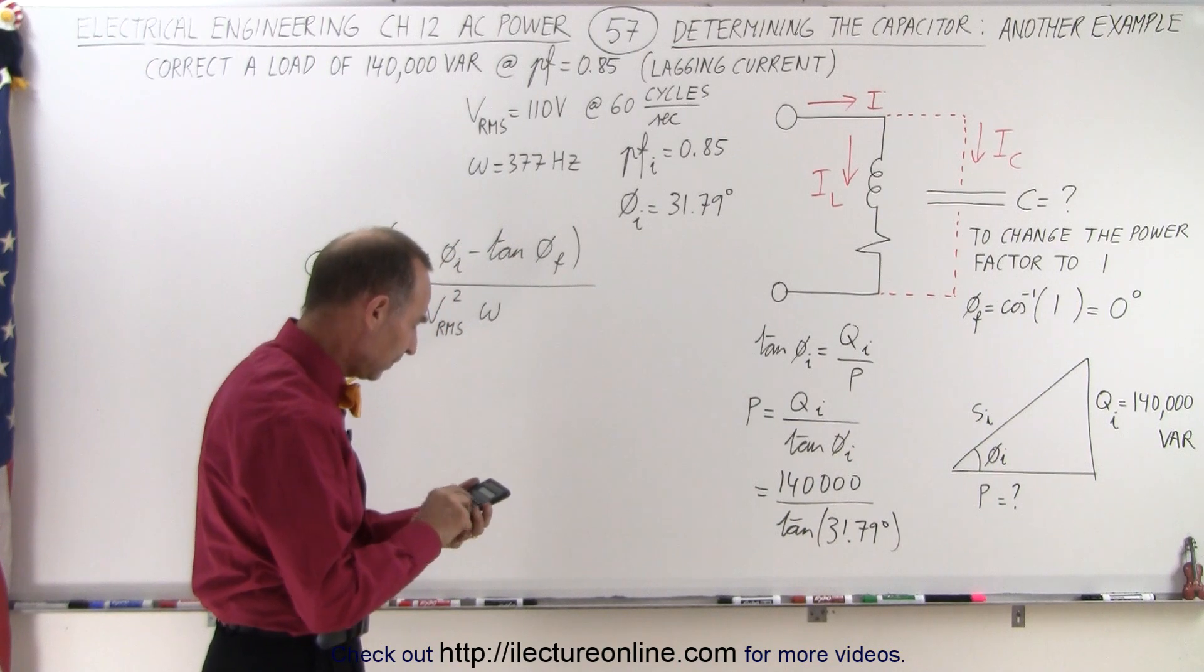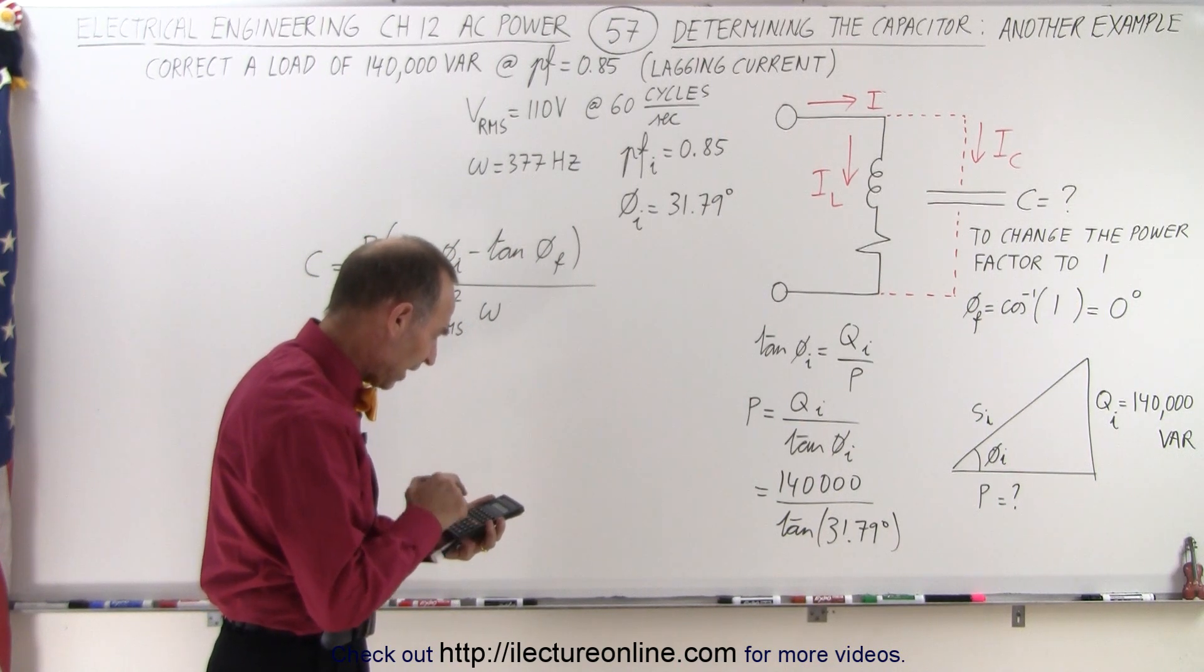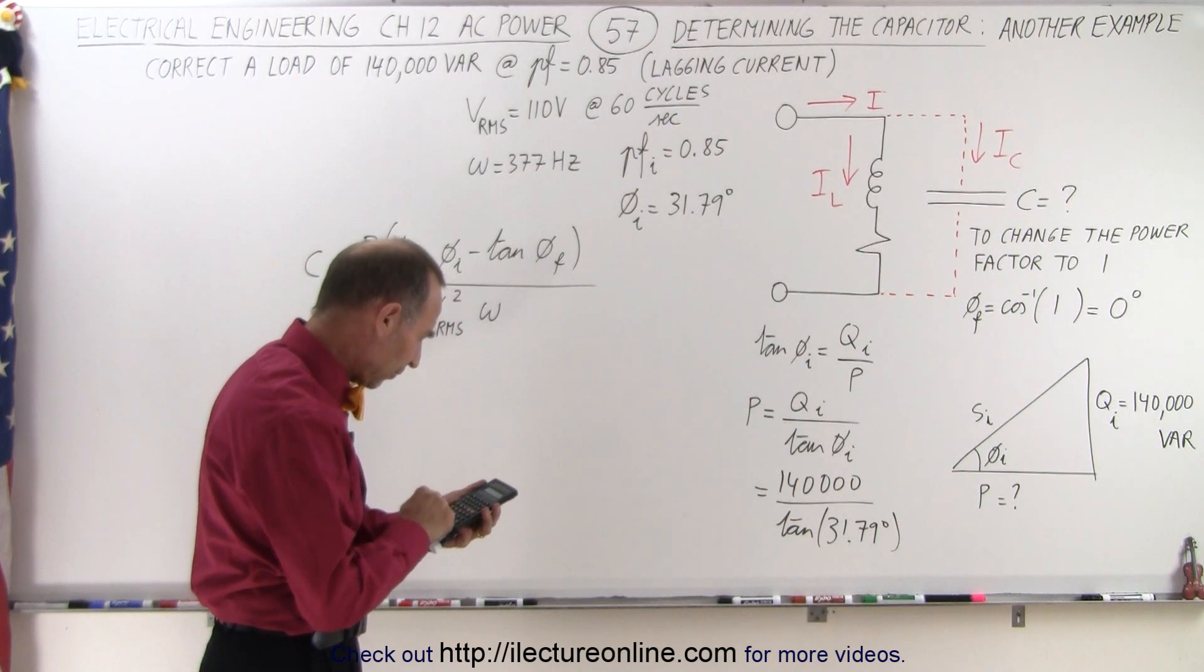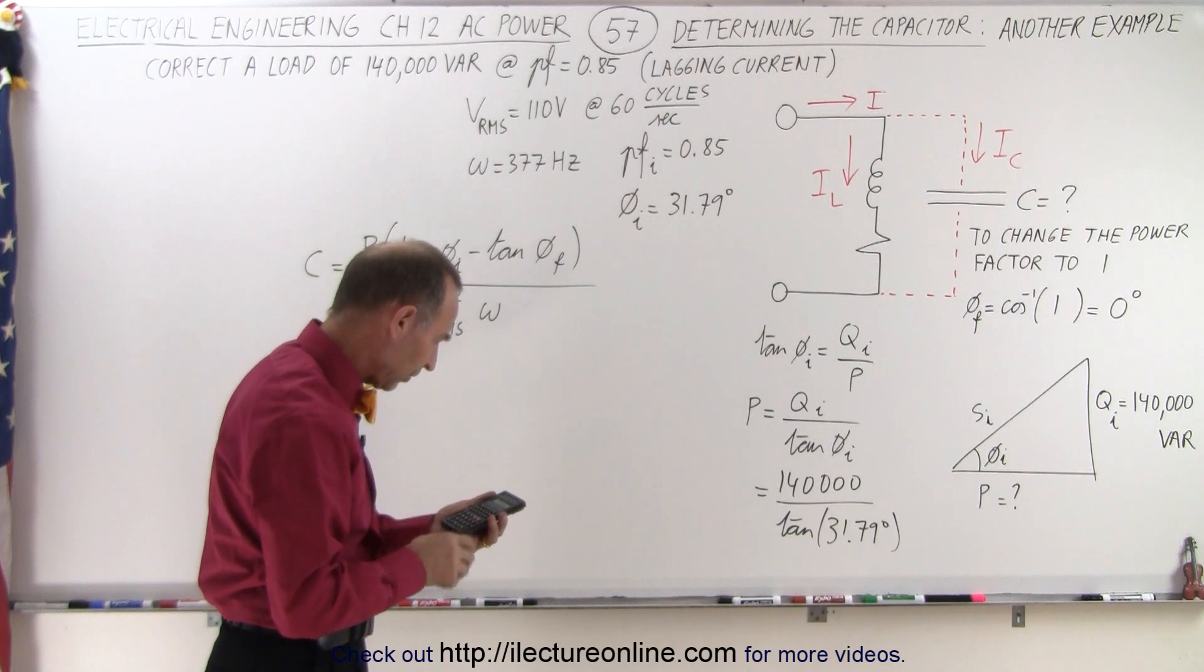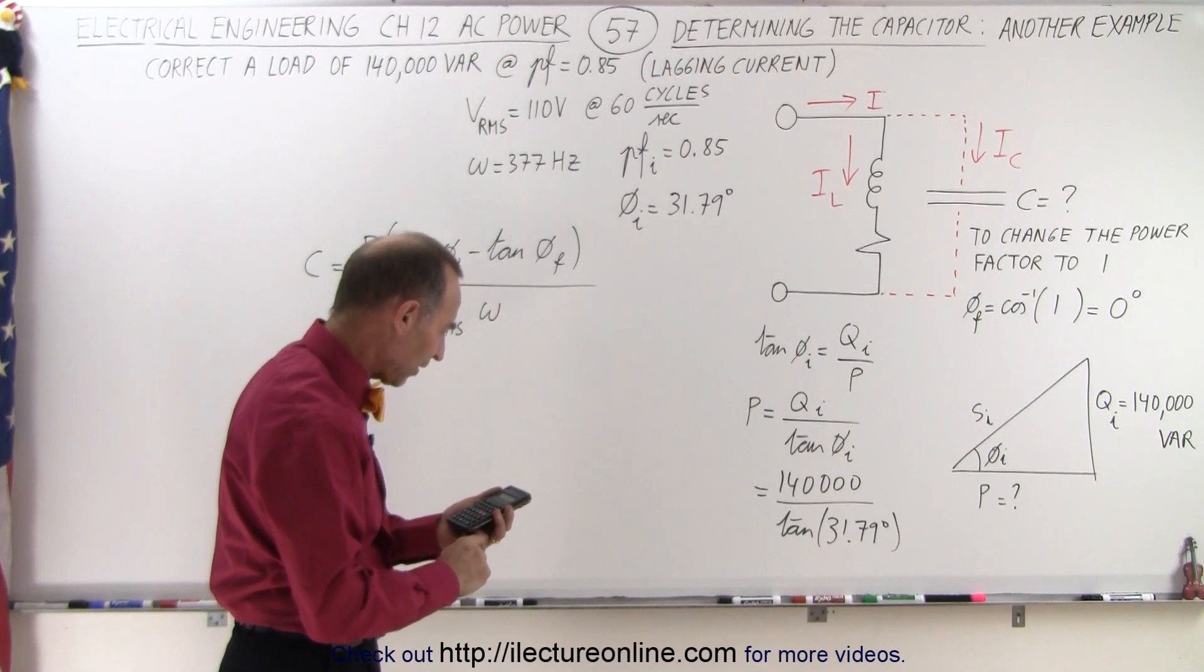We take the tangent of that angle, take the inverse of that, multiply that times 140,000, and that gives us 225,900.